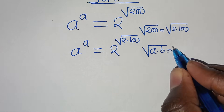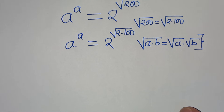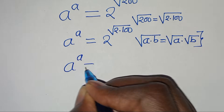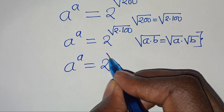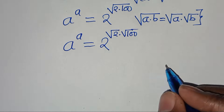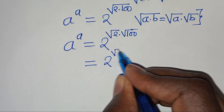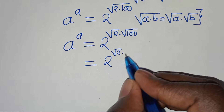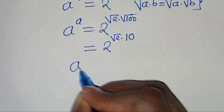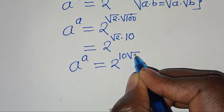This can be expressed as square root of a multiplied by square root of b. Applying this property, we have a to the power of a equal to 2 to the power of square root of 2 times square root of 100. And this implies that we have 2 to the power of square root of 2 times square root of 100, which is 10. So we have a to the power of a equal to 2 to the power of 10 square root of 2.